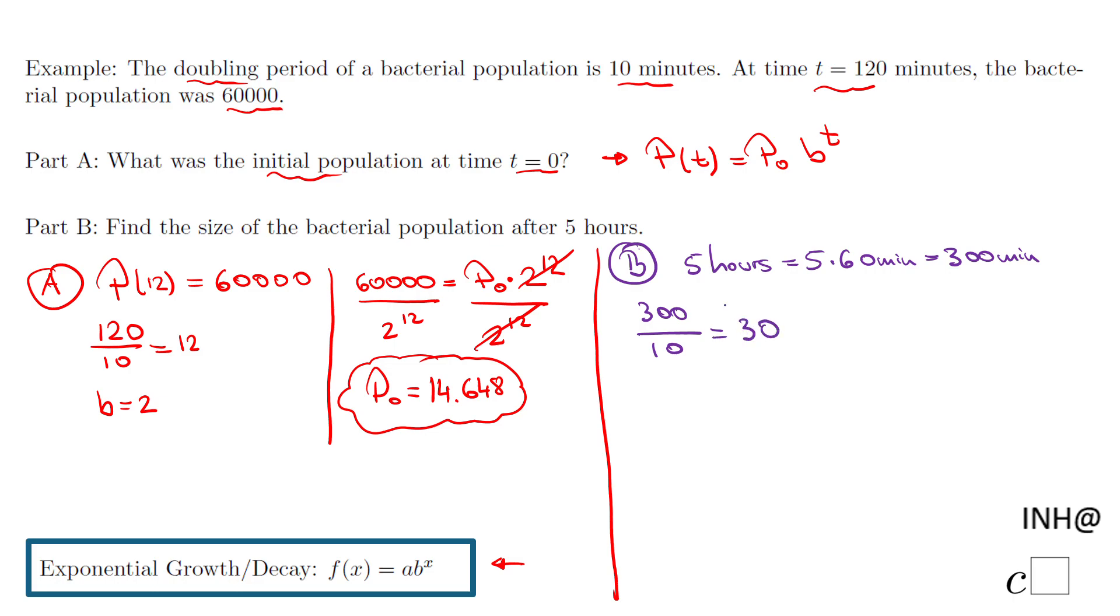of 30 equals P(0), which is 14.648 (I still have it in the calculator), times b, which is 2, to the power of 30. By the way, P(t) becomes this equation: 14.648 (the initial population) times 2 to the power of t. This is